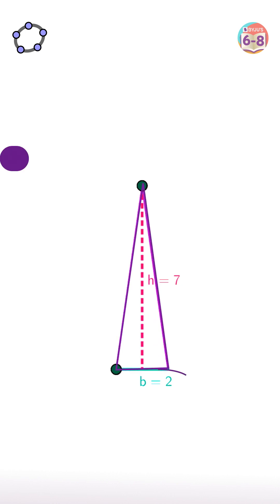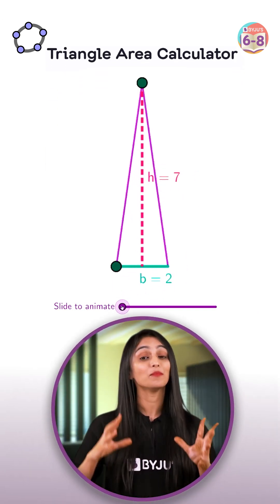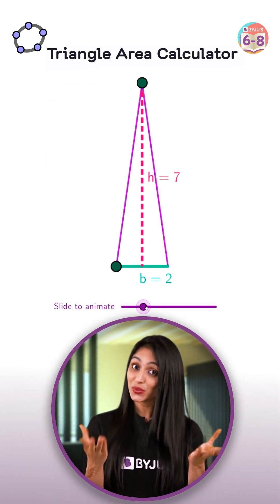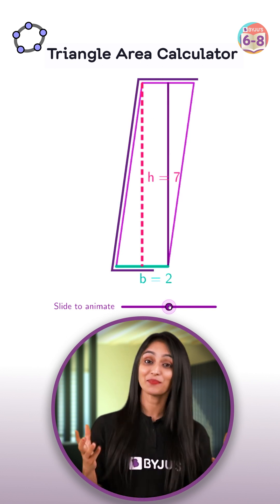Now first consider a triangle whose base is 2 units and height is h units. Now we will take an identical but inverted triangle. It forms a parallelogram.